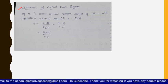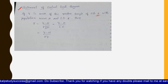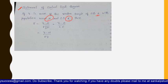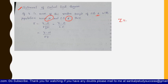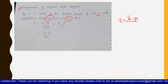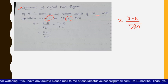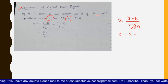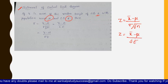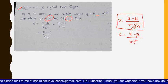First, let us see the statement of the Central Limit Theorem. Here x̄ is the mean of a random sample of size n, μ is the population mean, and σ is the standard deviation. The formula is z = (x̄ − μ) / (σ/√n). Here σ/√n is nothing but the standard error, also written as σ_x̄. This is the most important formula we will use in every problem.